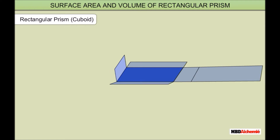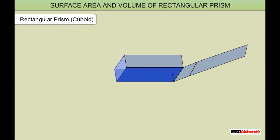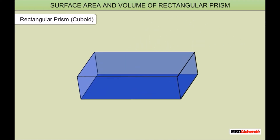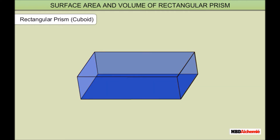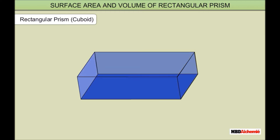This is a rectangular prism. It is a solid bounded by six rectangular faces, such that the opposite faces of a rectangular prism are identical. Its top and bottom faces are identical. The left and right faces are identical. The front and back faces are identical.